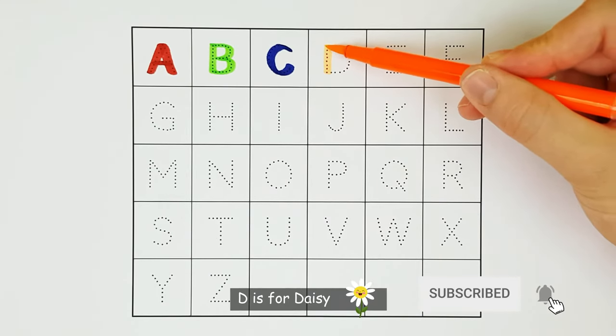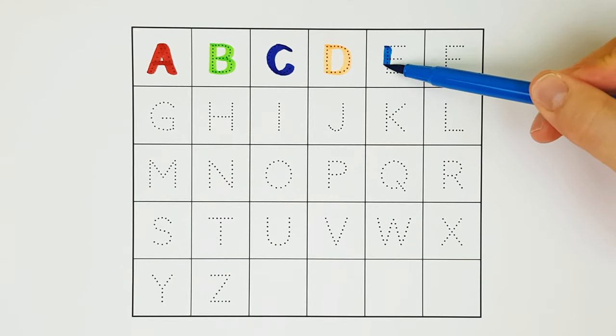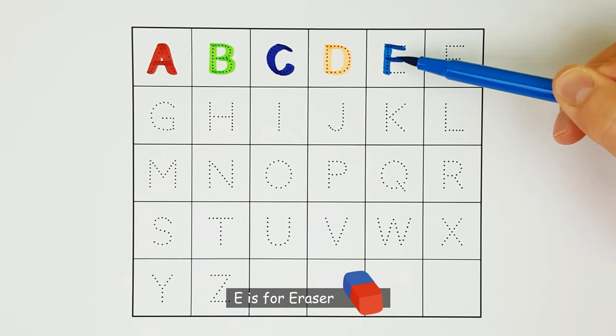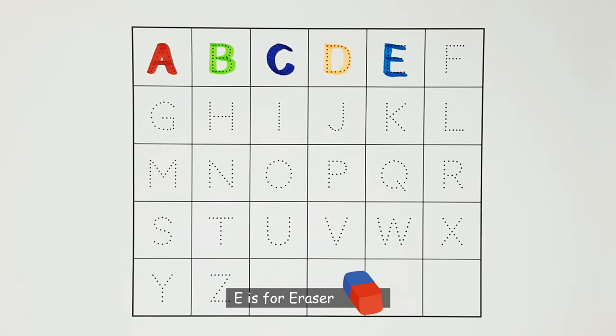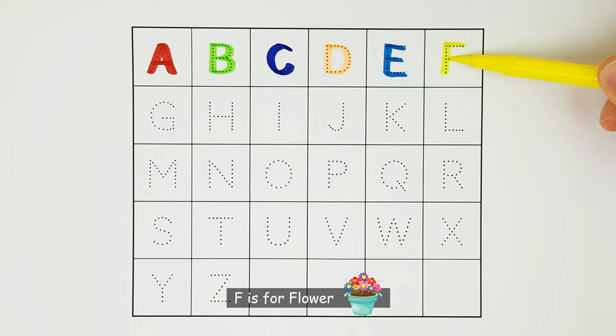D. D is for daisy. D. E. E is for eraser. E. F. F is for flower. F.